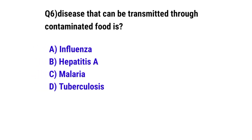Question number 6. A disease that can be transmitted through contaminated food is. The correct option is B: Hepatitis A.